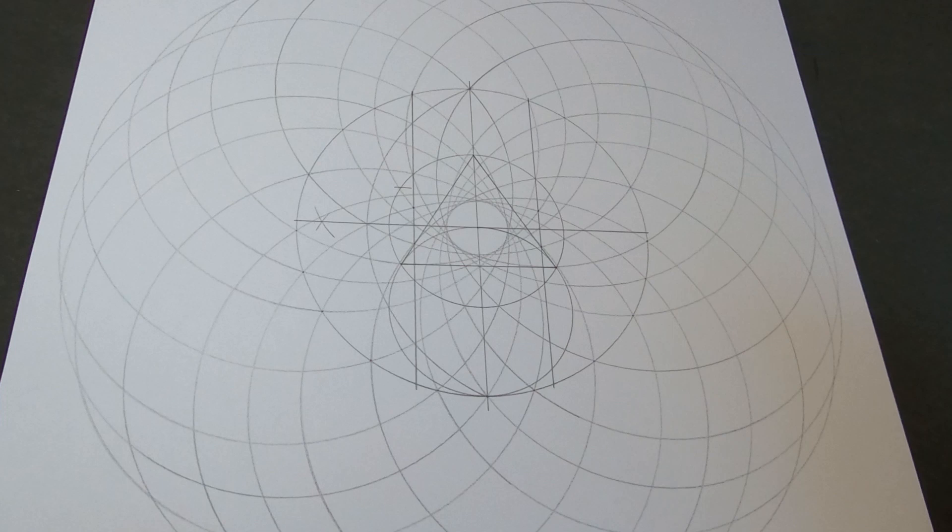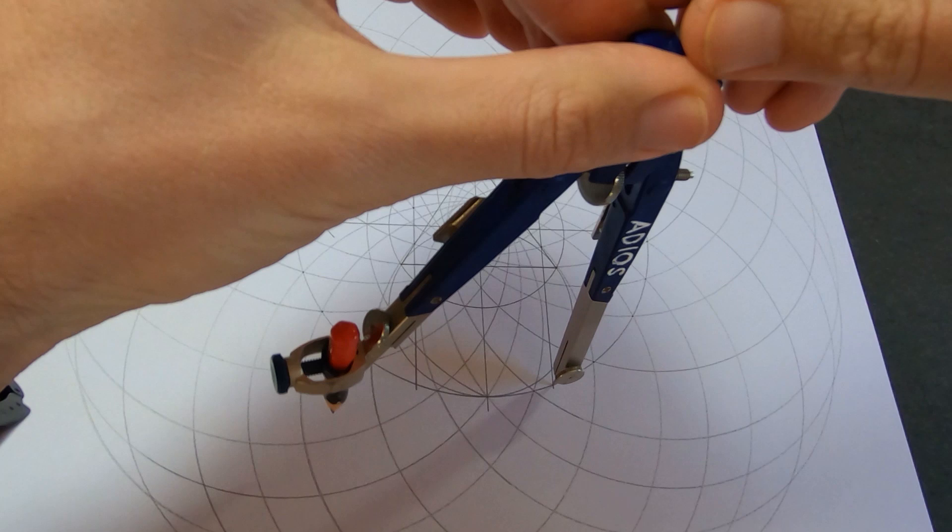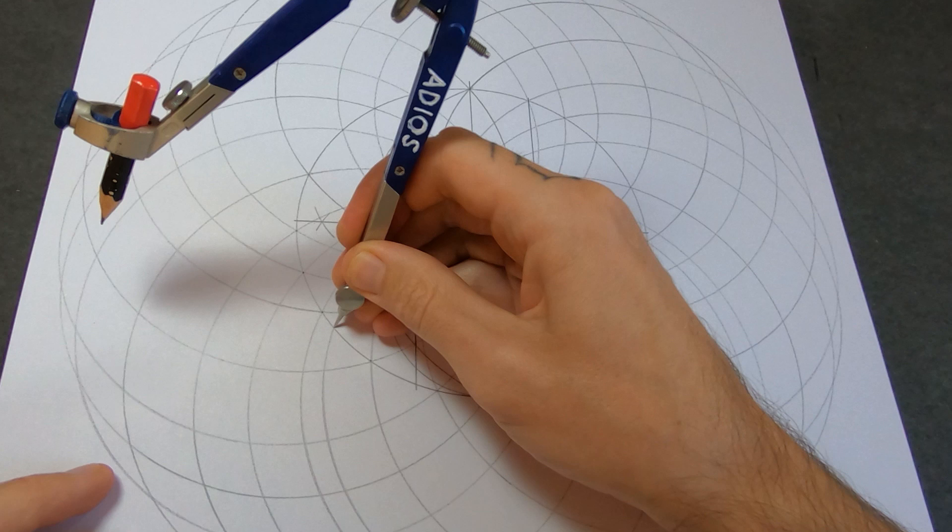And then you already know I'm moving on to the next point at the bottom and doing the same thing, drawing another 5 circles.